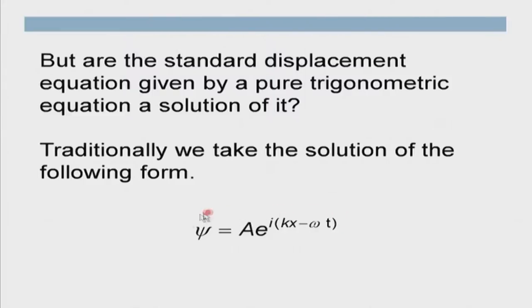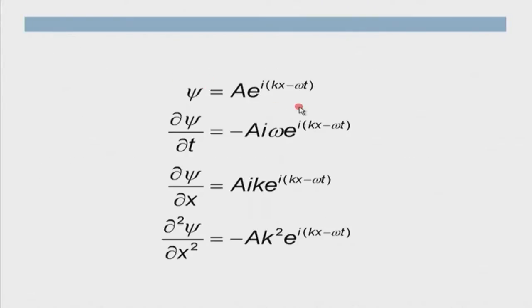Traditionally, when we take the Schrödinger equation, we always take psi = A e^(i(kx − ωt)). Taking the first partial derivative with respect to time gives −iω times psi. Taking the second partial derivative with respect to x gives −k² times A e^(i(kx − ωt)). When I substitute these into the trial equation d²psi/dx² = γ dpsi/dt, γ turns out to be equal to 2m/(iħ), which is a complex number and depends on mass but not on velocity, momentum, or energy.